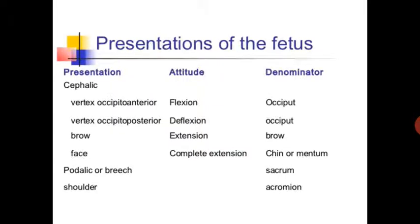In cephalic presentation, vertex occipito-anterior: the attitude is flexion and the denominator is the occiput. In vertex occipito-posterior, the attitude is deflexion and the denominator is again the occiput.